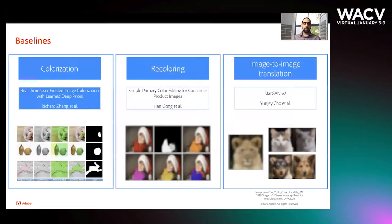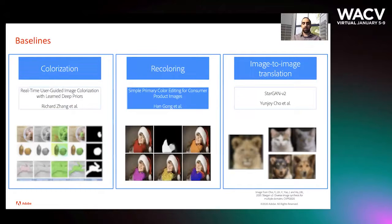User-guided image colorization uses grayscale image and user input. To adapt it to mask information we select pixels within the mask. Primary color editing uses clustering, so we cluster only pixels within the mask.